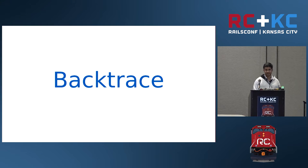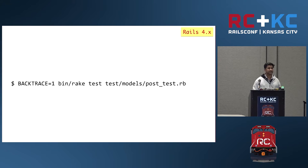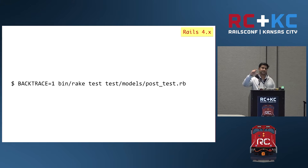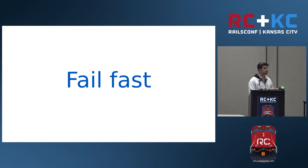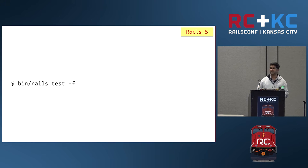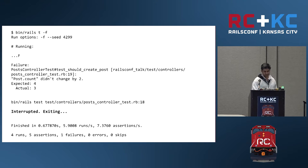Another new feature is related to backtrace. Before Rails 5, you had to pass an environment variable to see the backtrace. Rails uses its own backtrace cleaner and only shows relevant lines — but sometimes we want the full stack trace, for example if there's a failure related to a gem. Now we can see that by just passing `-b`. We can also do fail fast by passing `-f`, and it will stop at the first failure rather than running the whole test suite.